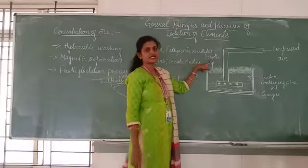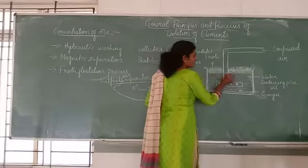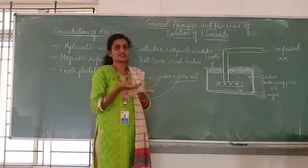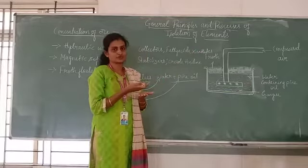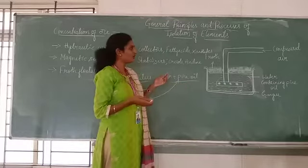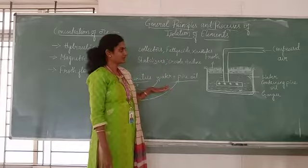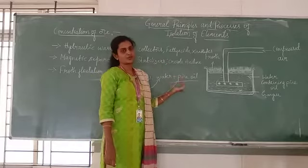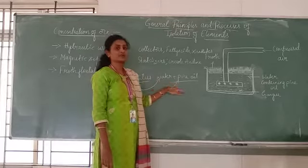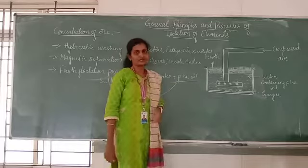The froth contains the ore particles. This layer of froth is skimmed off, taken out, the froth bubbles break away, and the ore particles remain — now free from gang particle impurities. These ore particles are then taken for extraction of the crude metal in the next step.